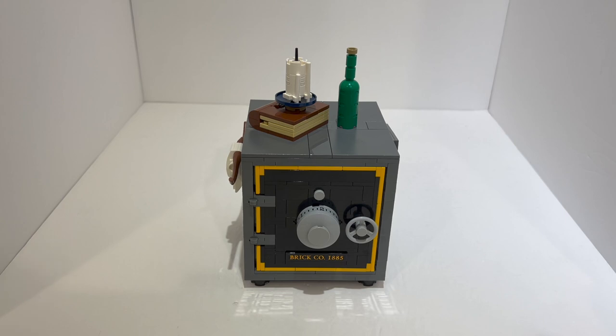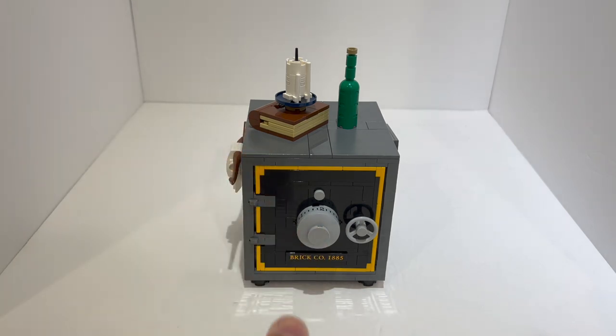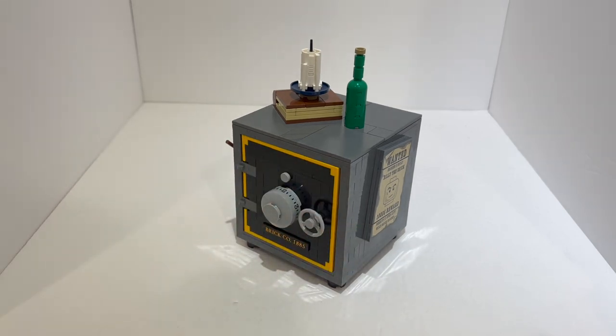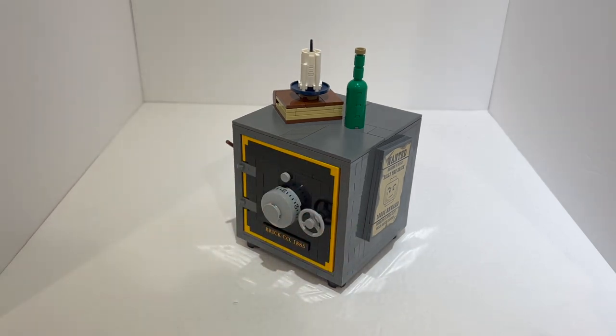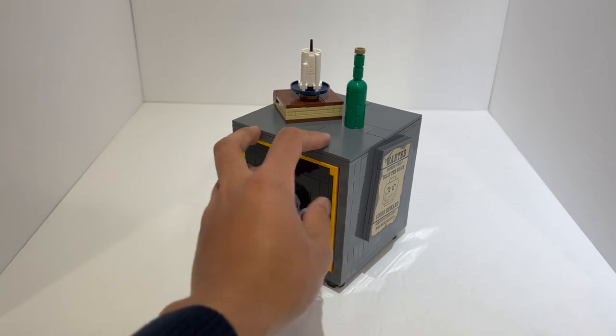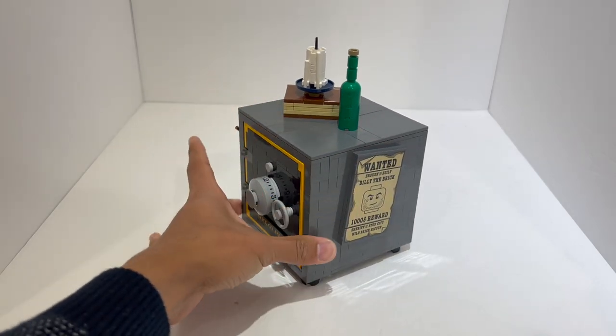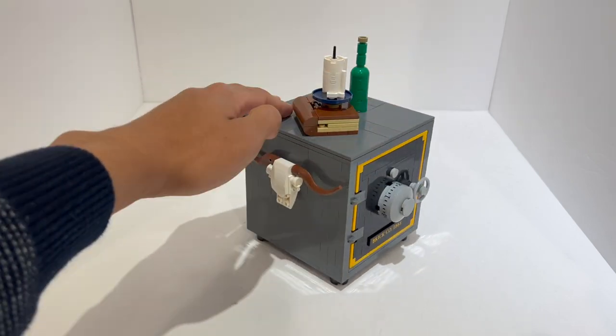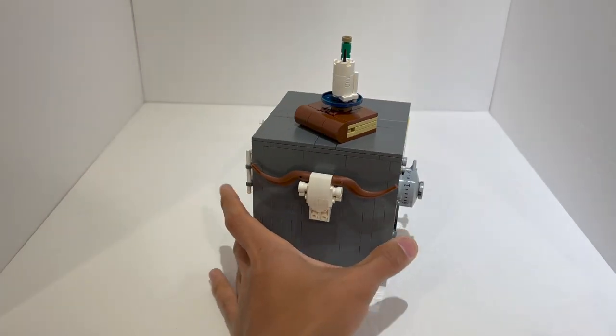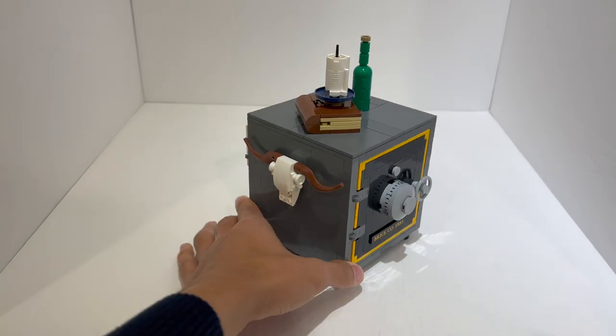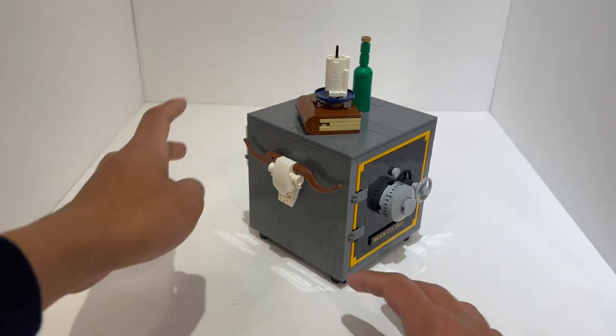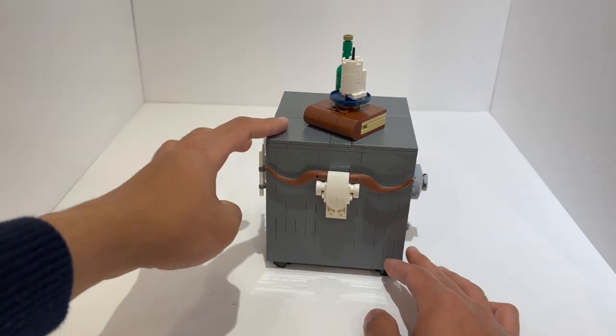Alright so here we have the Sheriff's Safe. This is going to be a bit of a shorter review because it is a smaller model, but I do want to give it its due because it is a very technically impressive model. On the outset honestly it's not that interesting of a build. It's literally just a large gray box with some western detailing on the sides, but for the most part you're basically building a gray cube. Now this all changes when you get to the inside, but let's first take a look at what's included on the outside.